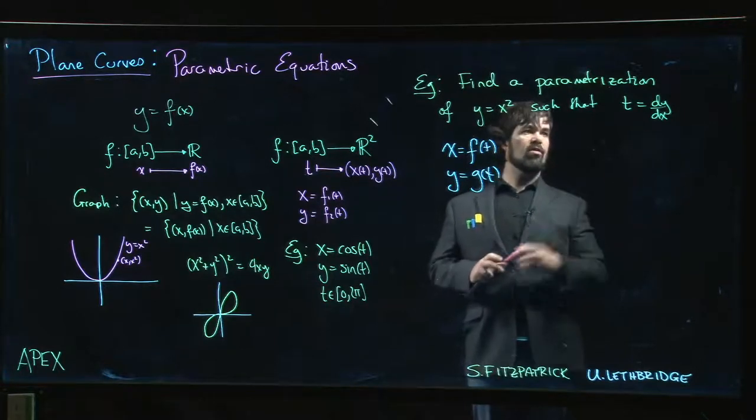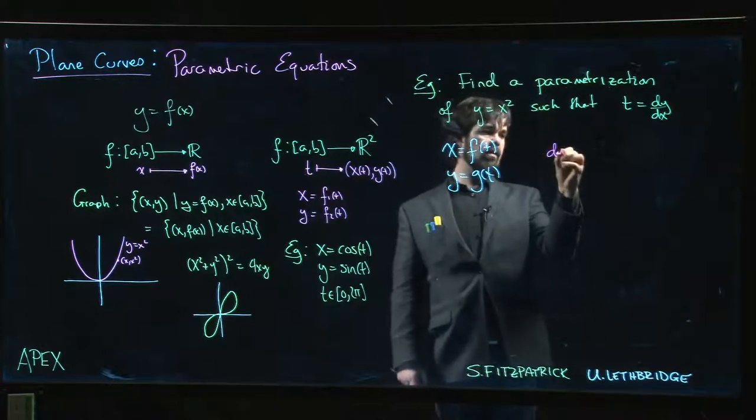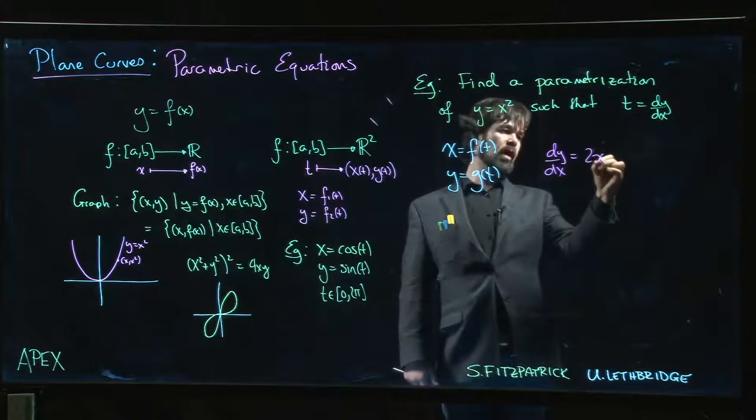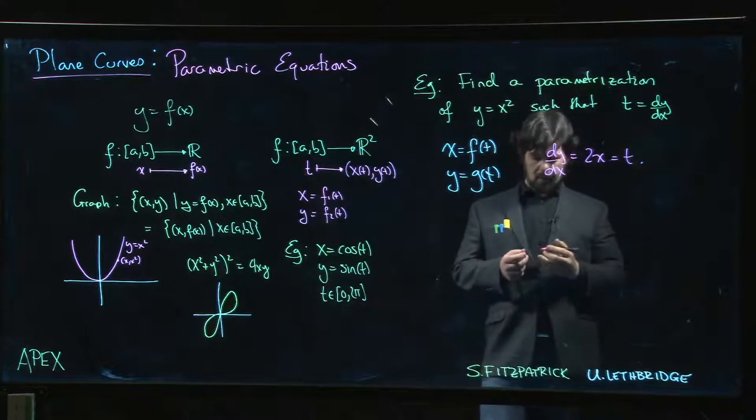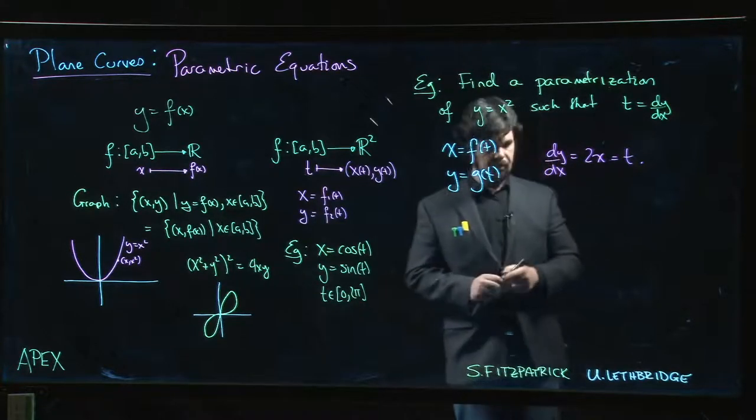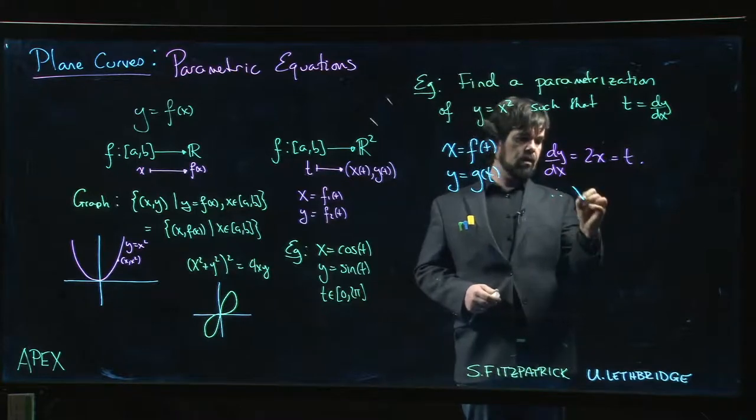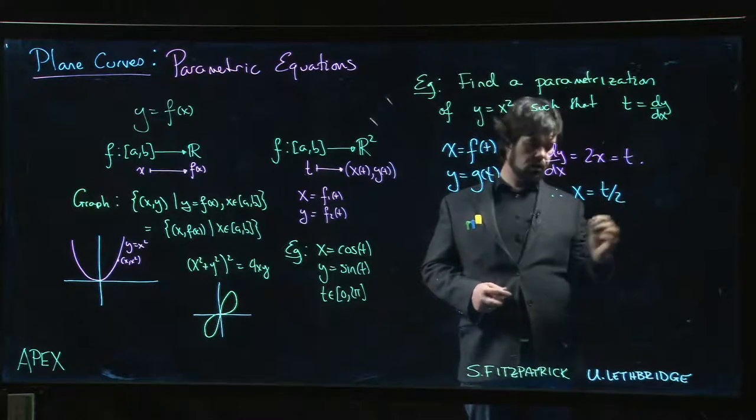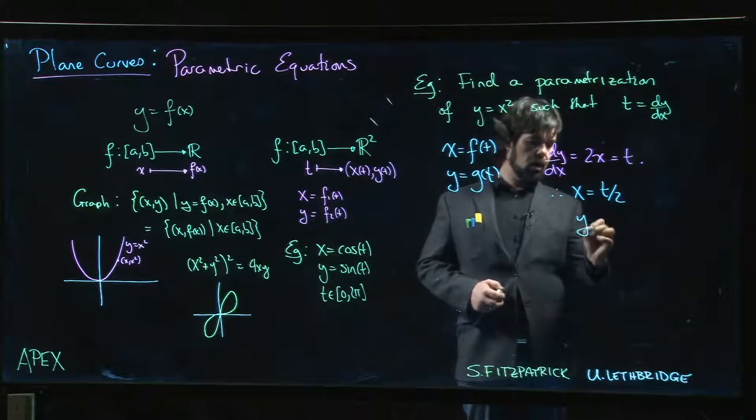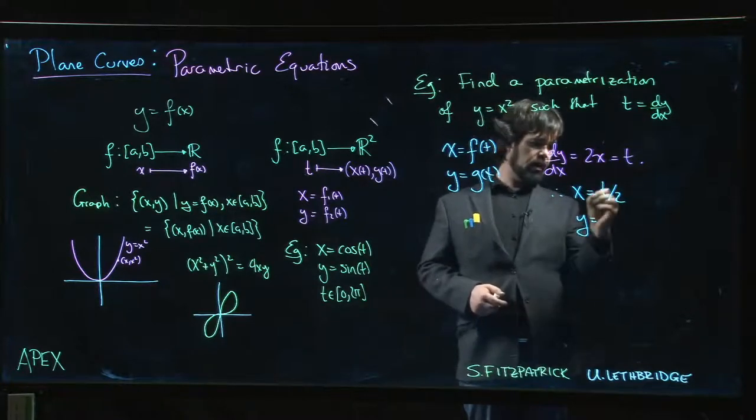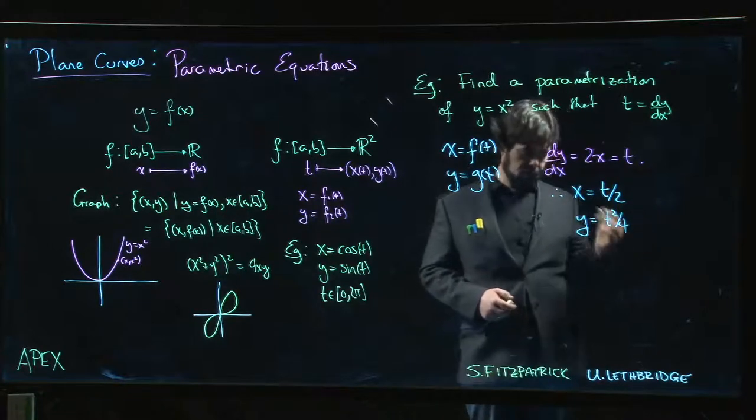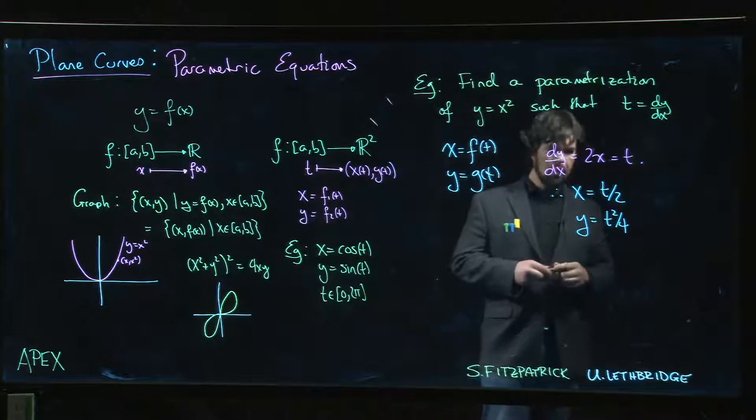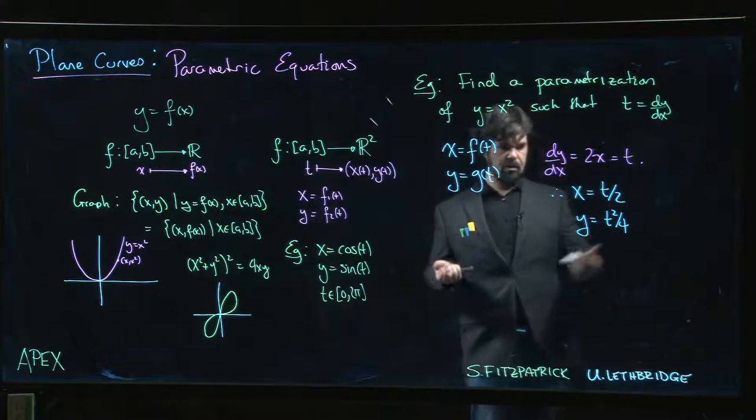If 2x is equal to t, then it's pretty easy to see what x has to be: x has to be t/2. And y, well of course y is x squared, so y is the square of t/2, which is just t²/4. So that's the parameterization: x = t/2, y = t²/4.